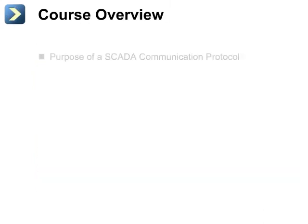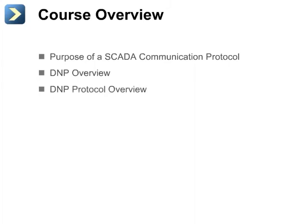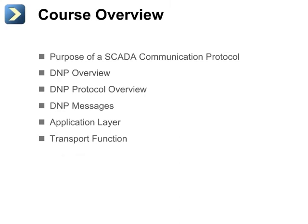This course begins with an overview of the purpose of a SCADA communication protocol. It then presents an overview of DNP III fundamentals, followed by an overview of the protocol itself. This is followed by a look at commonly used DNP messages. The course then presents a more detailed look at the application layer, the transport layer, and the link layer. Finally, benefits of industry standard protocols are discussed.